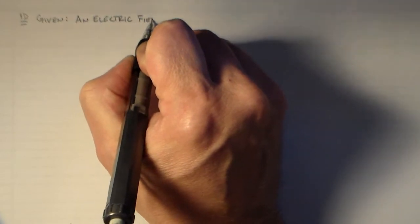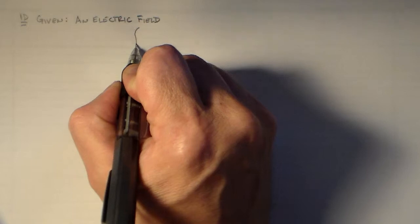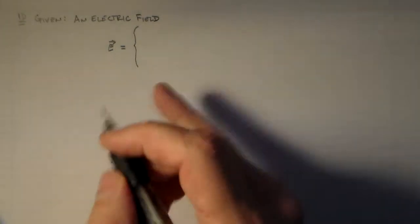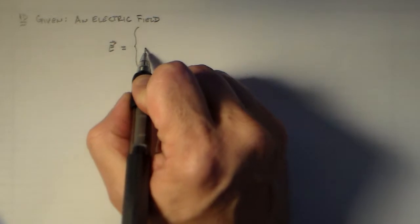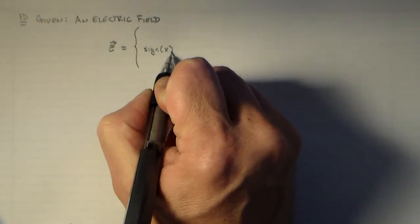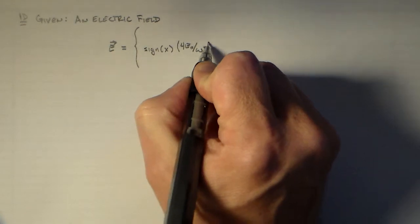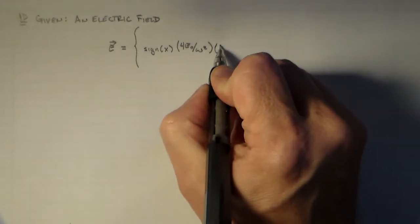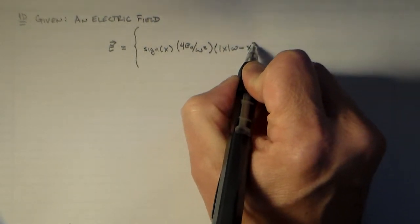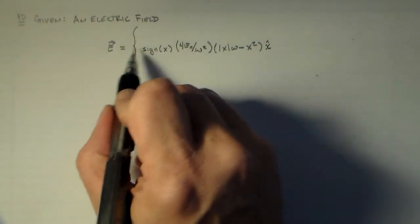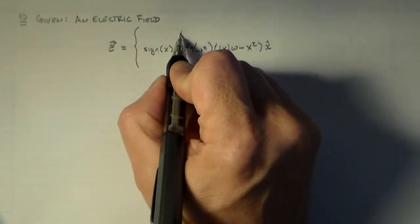When we've used Gauss's law so far, what we've done is we've taken a charge distribution and determined what the field would be. A more common problem is to know an effect — such as what the field is or maybe what the potential is — and then have to try to find the cause. That's a little more difficult, and that's why you get paid so much to be an engineer. So rather than taking the charge distribution and finding the field, we're going to have the field and try to find the charge distribution.